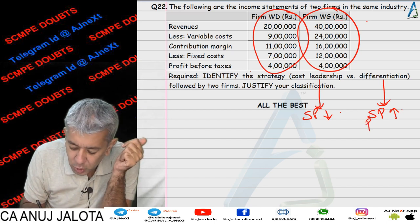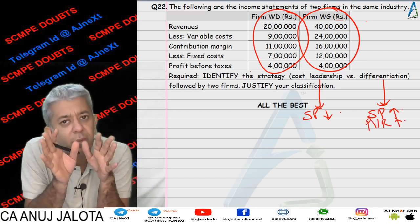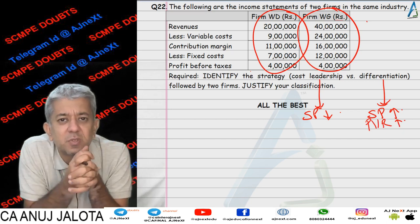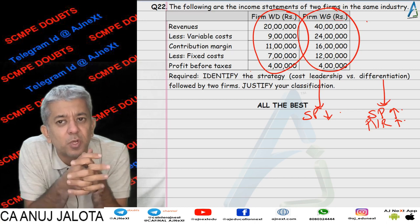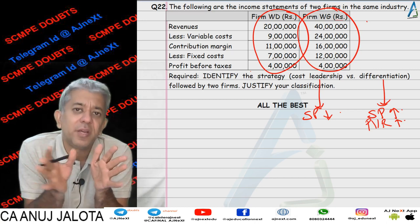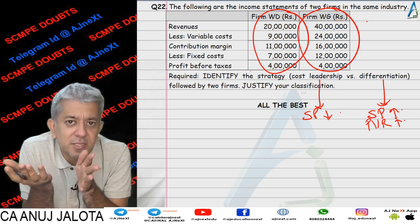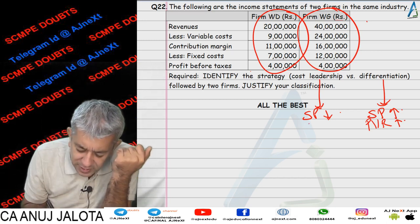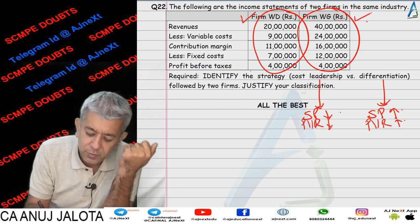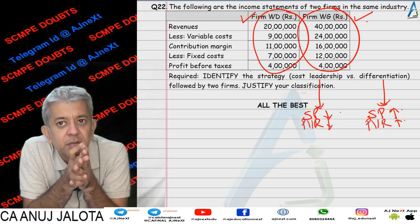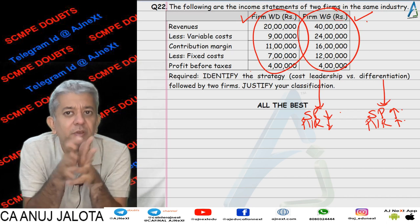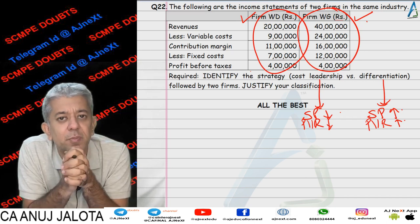Do remember: if selling prices are higher, the PV ratio will always be higher. PV ratio is affected by two things — selling price and variable cost. But from variable cost alone it's slightly difficult to determine which policy is followed. From selling prices it is quite evident: if selling prices are higher, PV ratio will be higher; if lower, PV ratio will be lower. So wherever PV ratio is higher, the company is following product differentiation; wherever it is lower, the company is following cost leadership.